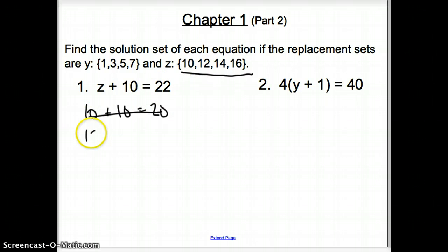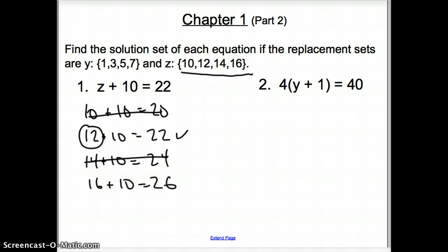Next we are going to try 12. 12 plus 10 is 22. So yes, that works. 12 is good. Now let's try 14. 14 plus 10. Does that equal 22? No, that equals 24. So that does not work. And then 16 plus 10 is 26. So that doesn't work. So the only point that works is 12. So our only answer is 12.